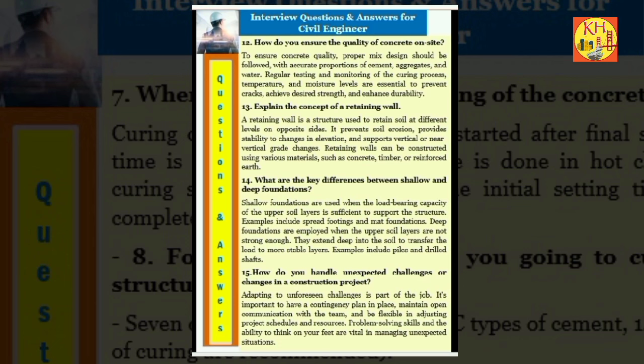Question 14: What are the key differences between shallow and deep foundations? Shallow foundations are used when the load bearing capacity of the upper soil layers is sufficient to support the structure. Examples include spread footings and mat foundations. Deep foundations are employed when the upper soil layers are not strong enough. They extend deep into the soil to transfer the load to more stable layers. Examples include piles and drilled shafts.